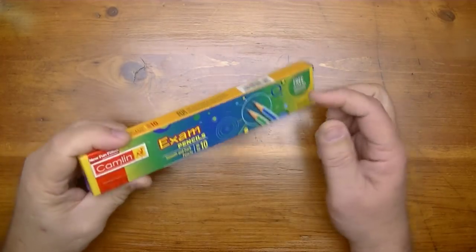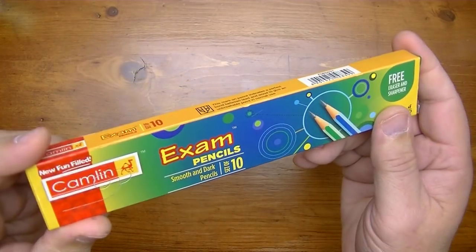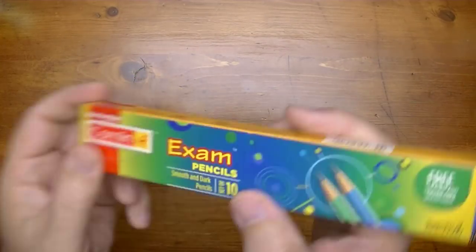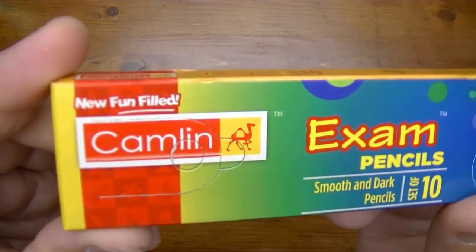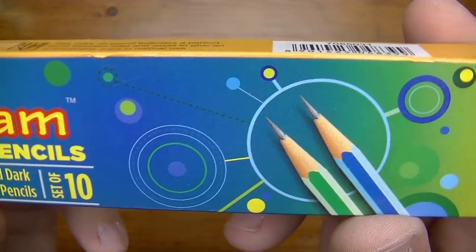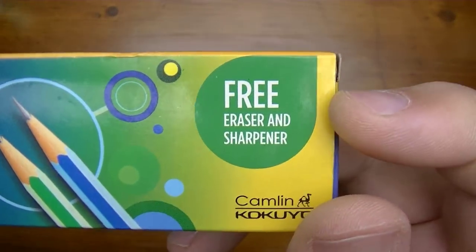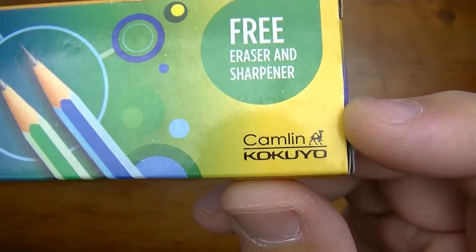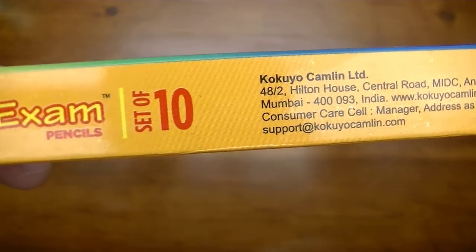Okay let's check these things out. Well it's a colorful box. Says new fun-filled Camlin Exam Pencil Smooth and Dark Pencils. A set of 10 and it comes free with an eraser and sharpener. There's the side of the box.